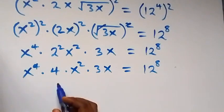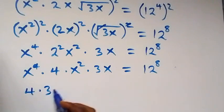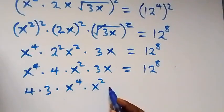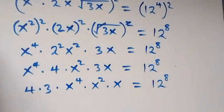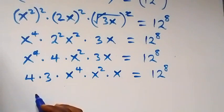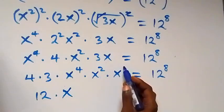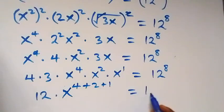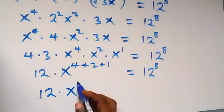From here we can separate the numbers, bringing the x terms together. So we write 4 times 3, then times x raised to power 4, times x squared, times x, equals 12 raised to power 8. That is, 4 times 3 is 12, then times x raised to power — from the law of indices — 4 plus 2 plus 1, equals 12 raised to power 8. This becomes 12 times x raised to power 7.